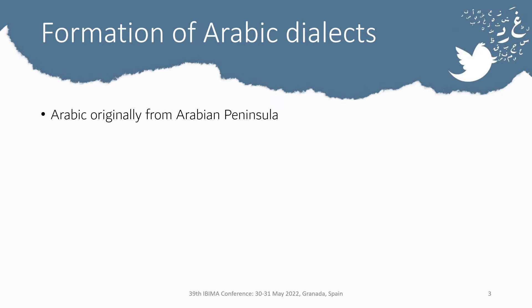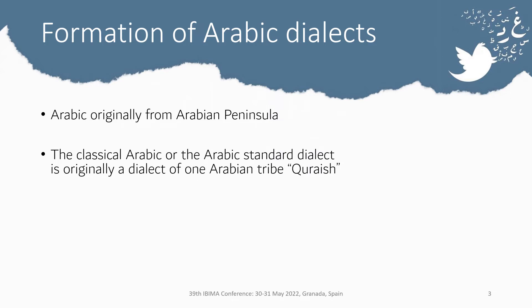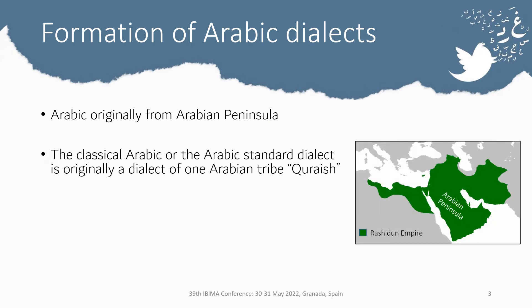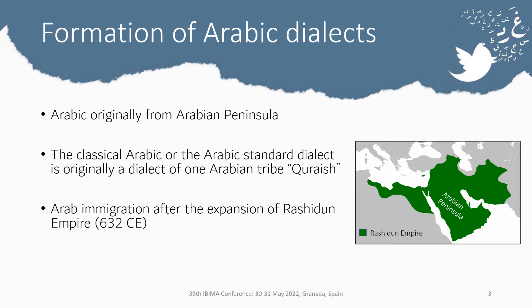Arabic originally came from the Arabian Peninsula. Classical Arabic, or the standard Arabic dialect, originated from the dialect of one Arabian tribe called Quraysh. Many factors contributed to the formation of different Arabic dialects, the most important being Arab immigration after the spread of Islam and the expansion of the Rashidun Empire outside the Arabian Peninsula. The people in new lands began to speak and learn Arabic, and that is where the different dialects came from.